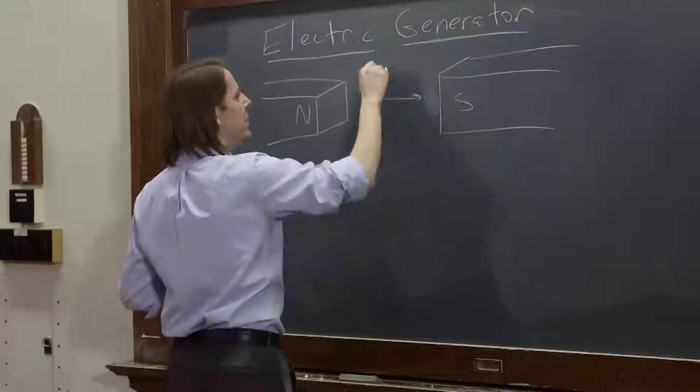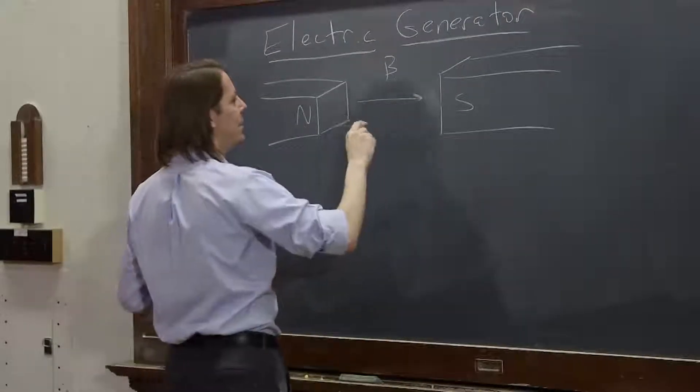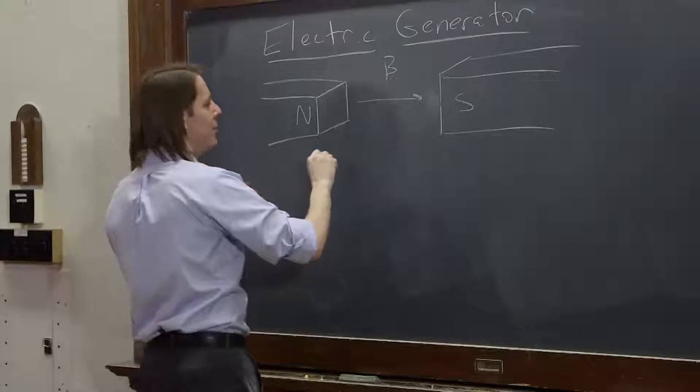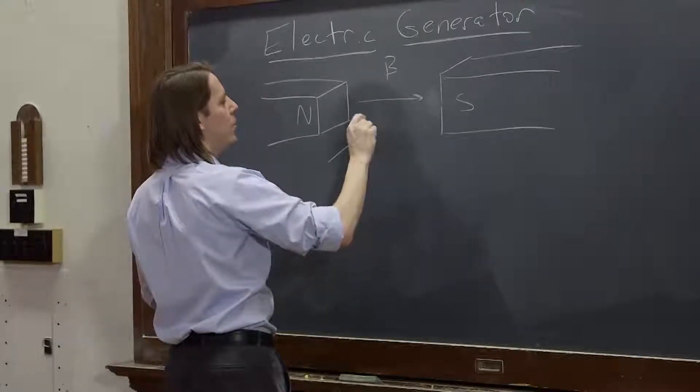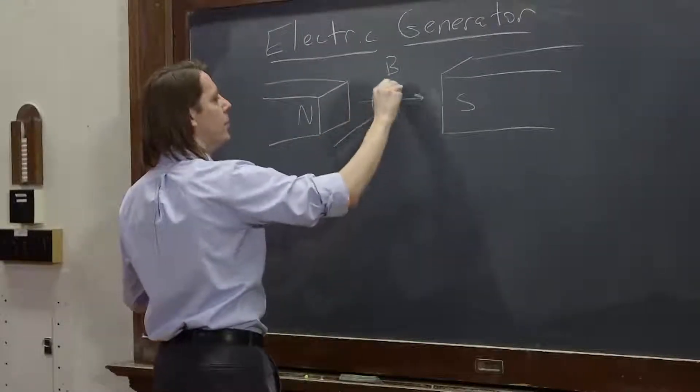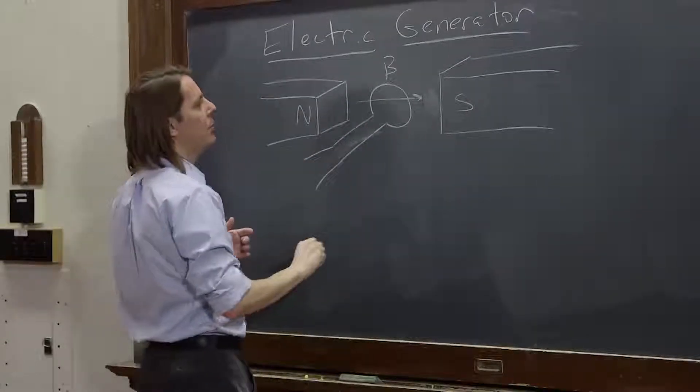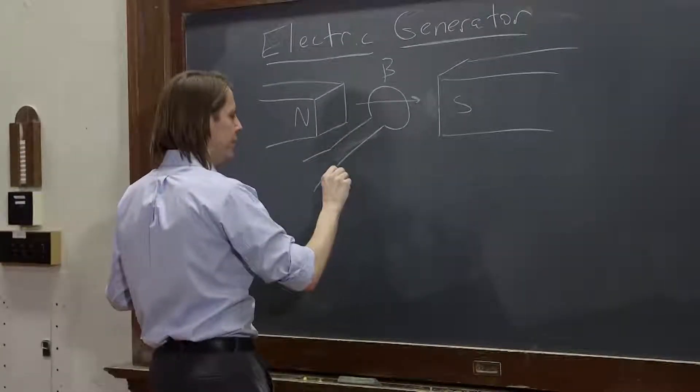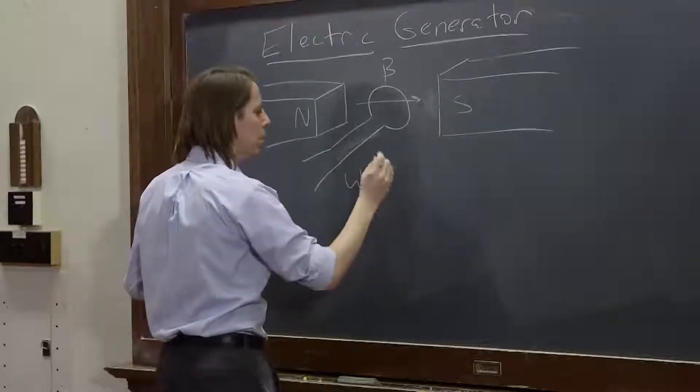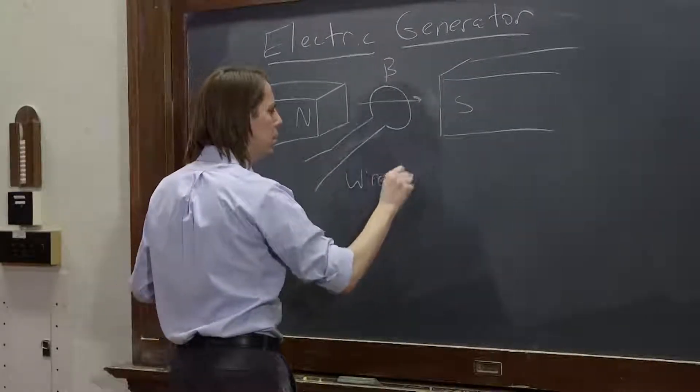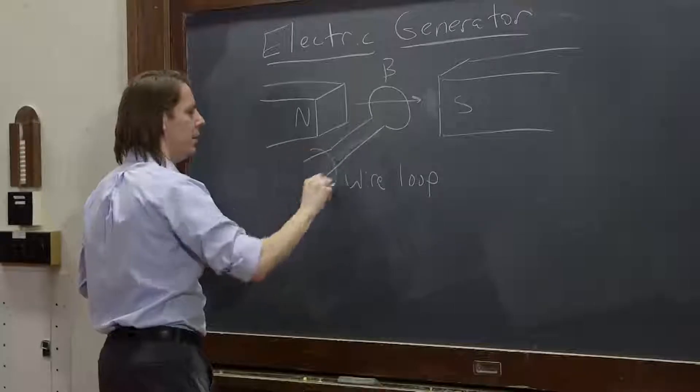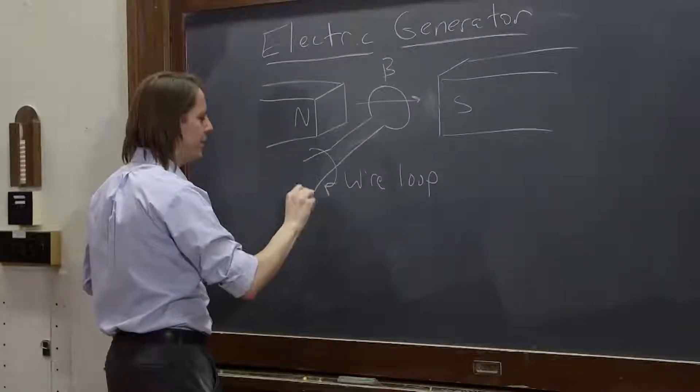So we have a B field in this gap in the magnet, and inside we put a coil of wire that we can rotate. So this is a wire loop, and it can spin about this axis.